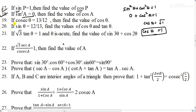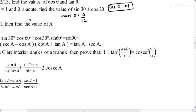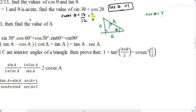Next, question number 19. The question says: if cosec θ = 13/12, find the value of cos θ. If it were sin, we could just write the reciprocal of cosec. But they have asked for cos θ, so we have to draw a right triangle. I will place θ here — this side is the hypotenuse, this is opposite, and this is adjacent.